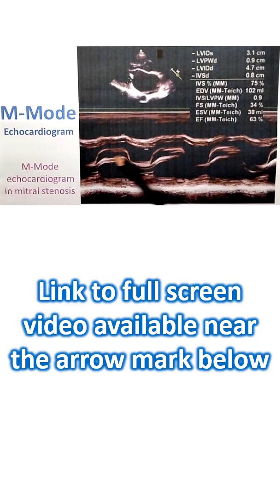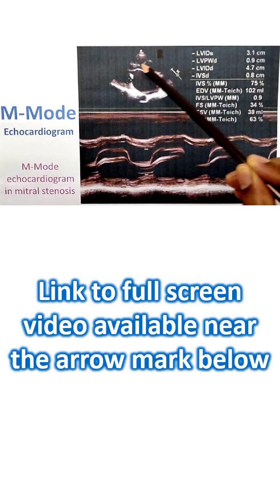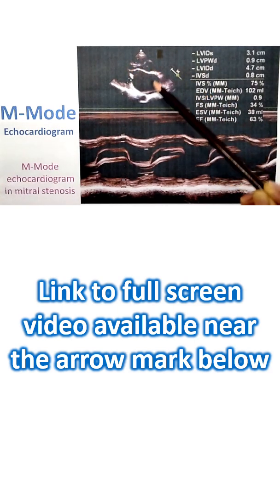This is the mitral valve echocardiogram. This particular M-mode echocardiogram is from a case of mitral stenosis. You can see the calcification of the tip of the posterior mitral leaflet here and doming of the anterior mitral leaflet. You can also call it as a hockey stick appearance. And you can see that the left atrium is grossly dilated.